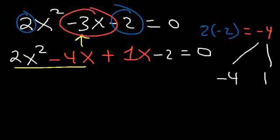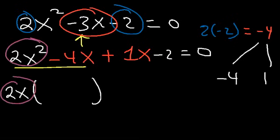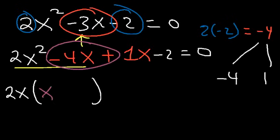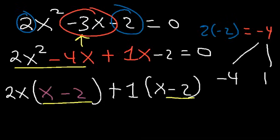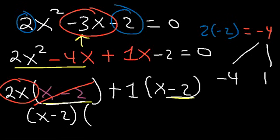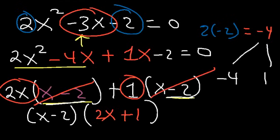In the first two terms, take out the GCF — the greatest common factor — which is 2x. 2x squared divided by 2x is x, and negative 4x divided by 2x is negative 2. Now there's no GCF between 1x and negative 2, so factor out a 1, giving us x minus 2. Now if these two factors are the same, you're going in the right direction. Factor x minus 2 from both terms: from the first term what's left is 2x, and from the second term what's left is plus 1. So the answer is x minus 2 times 2x plus 1.